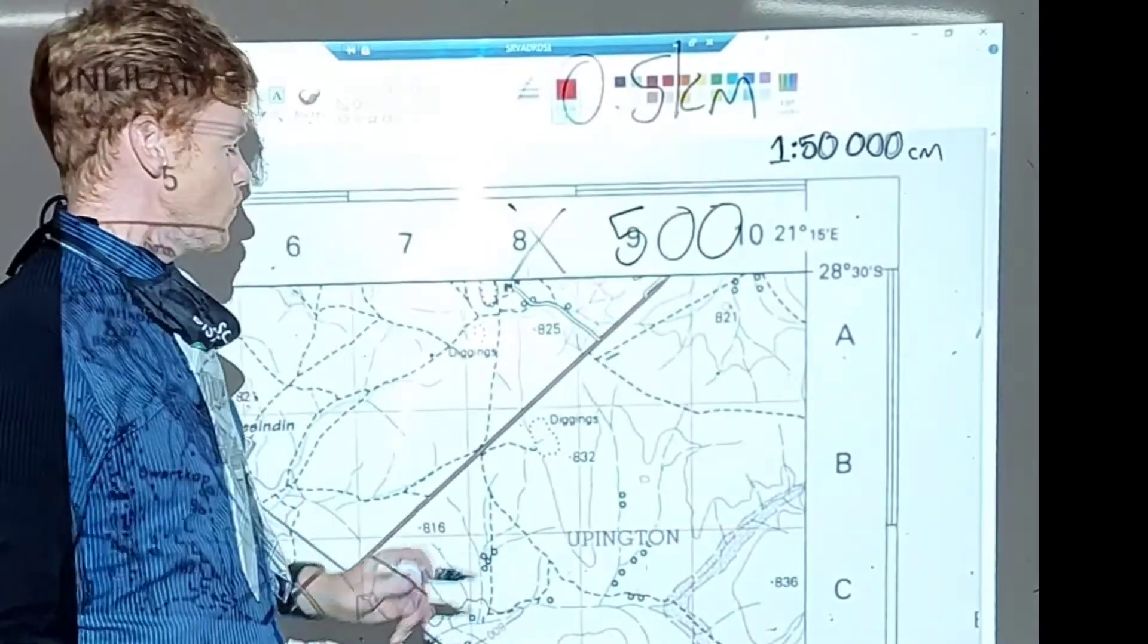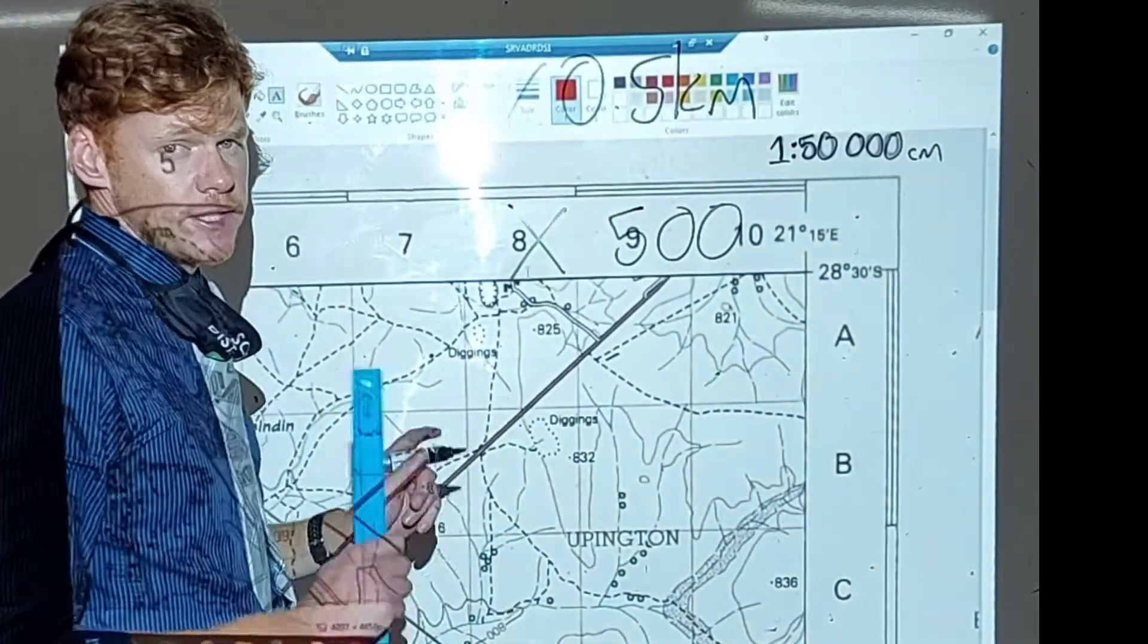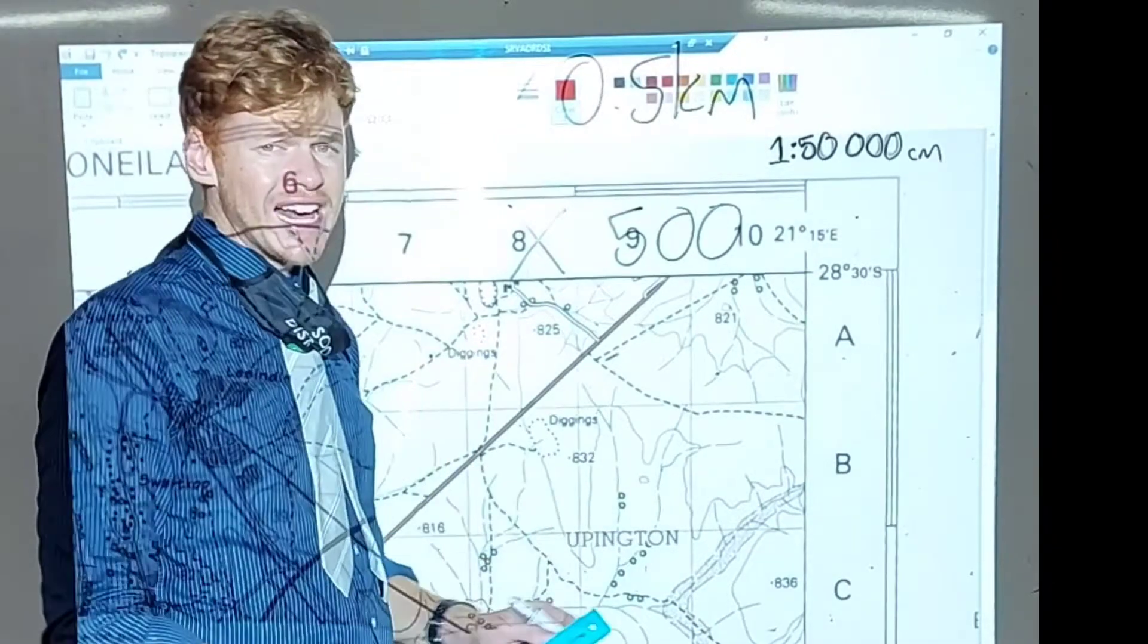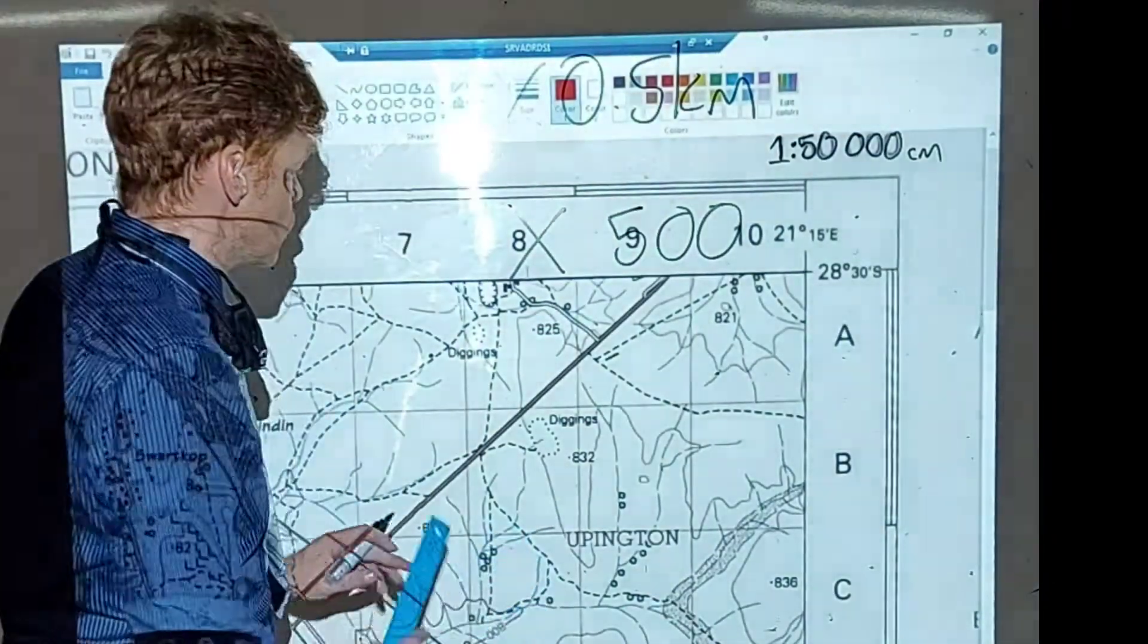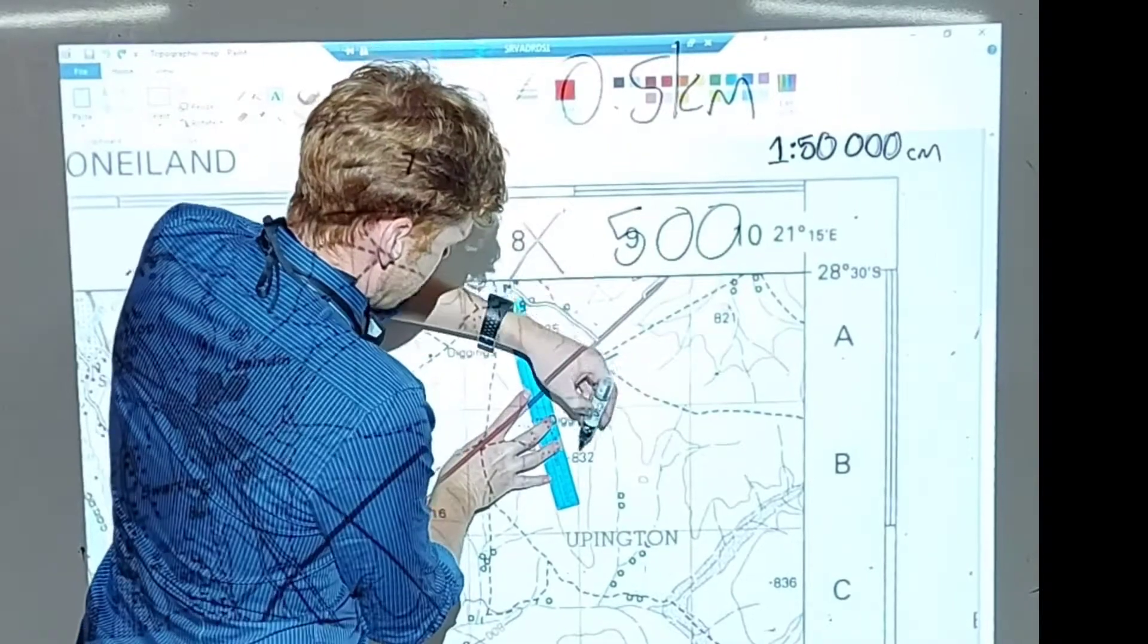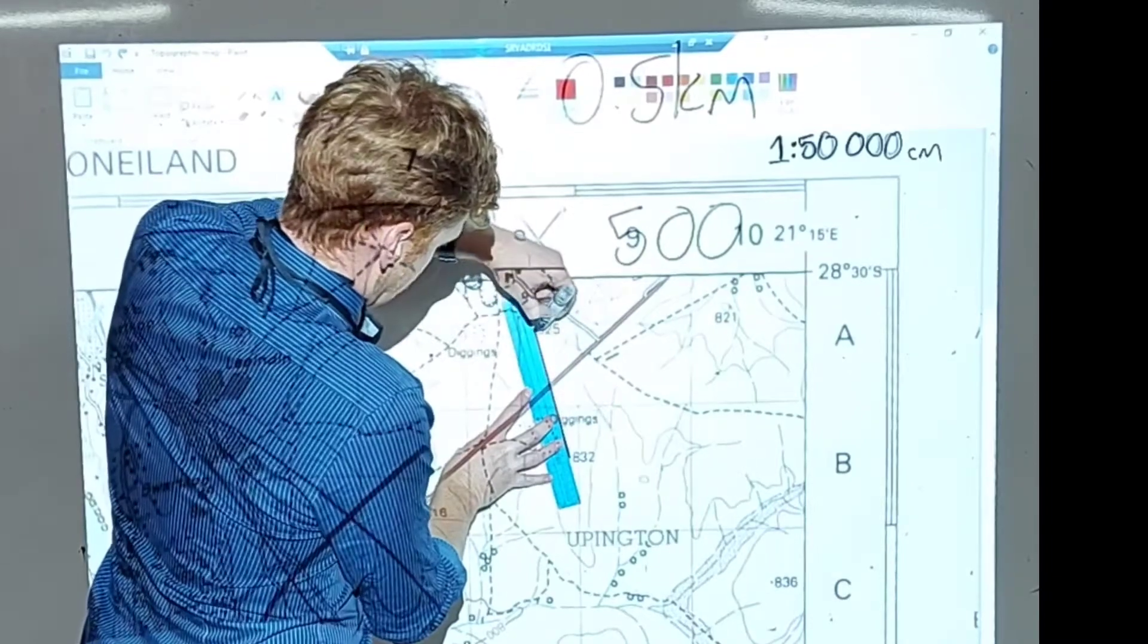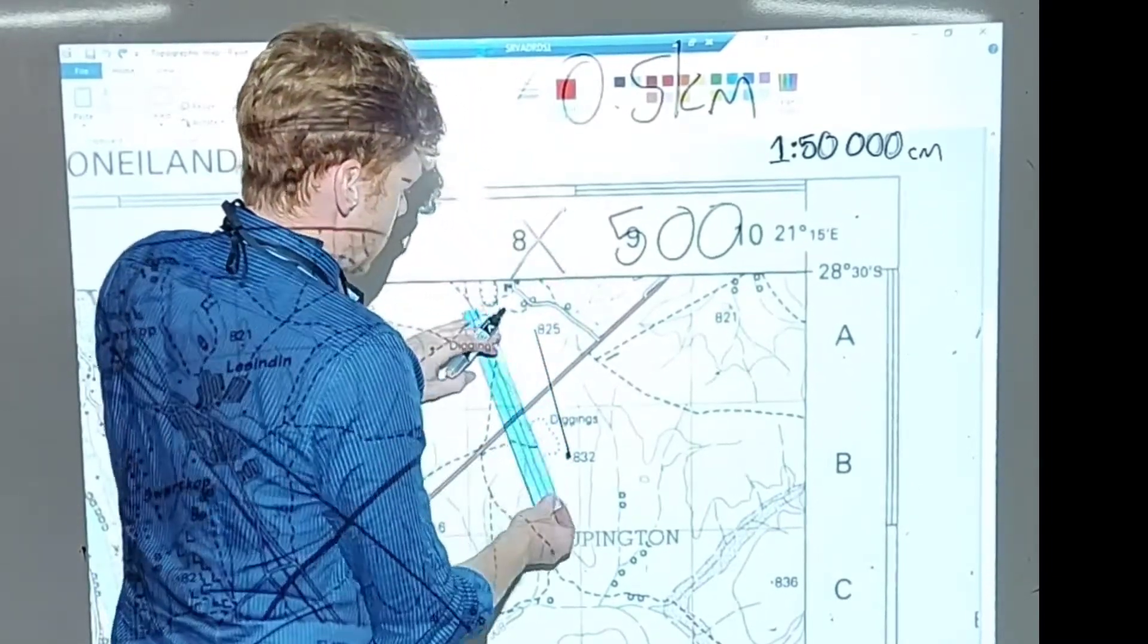Now, we're going to do the following example. We're going to do the distance, and if I say the distance as the crow flies, I'm referring to a straight line. So we're going to take, and you're going to take your non-permanent fineliner, and you're going to draw a line between these two spot heights.